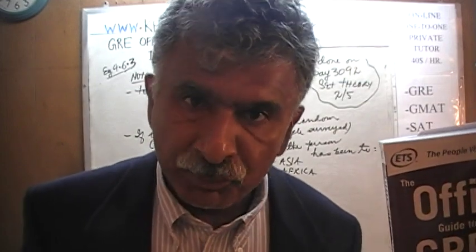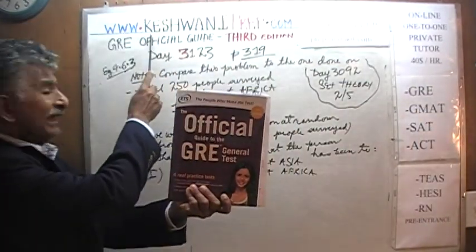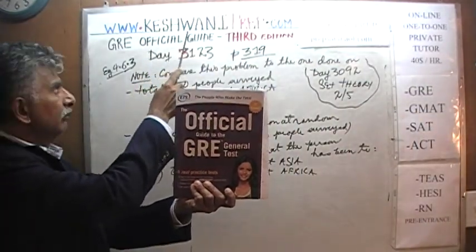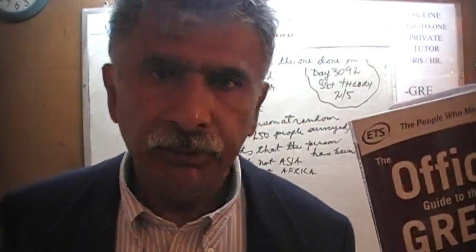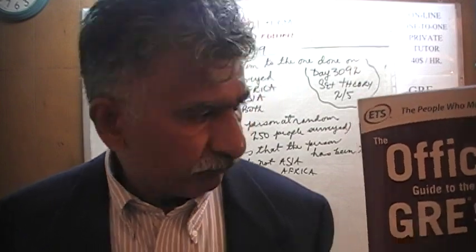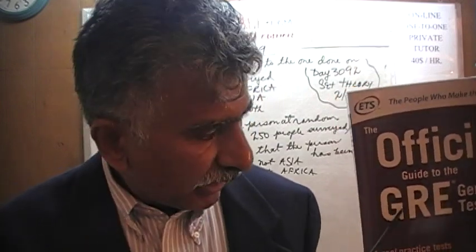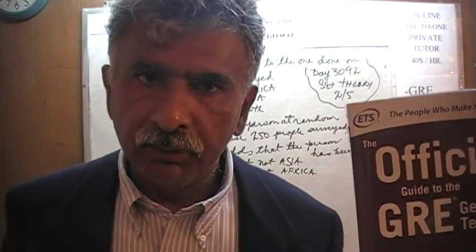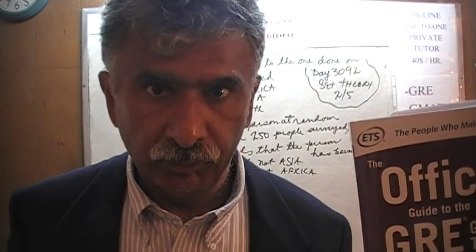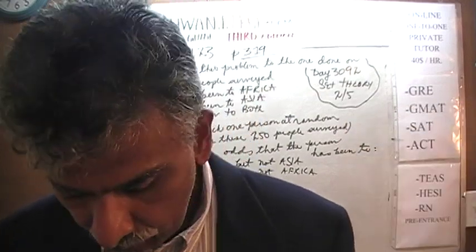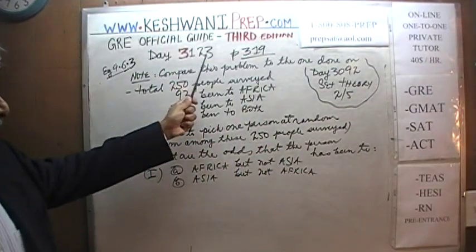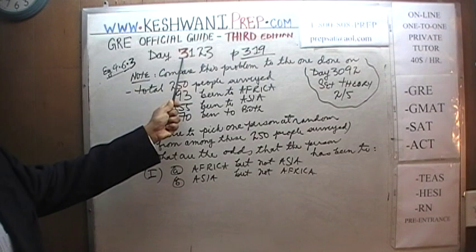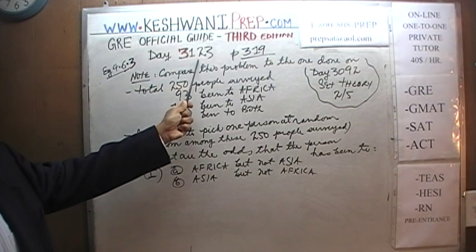Hello, my name is Keshwani, K-E-S-H-W-A-N-I. We are here because we want to prepare for the GRE. We have been solving math problems out of this book, the Official Guide to the GRE, the third edition. If you do not own this book already, purchase one immediately. You are going to need it. Today is our lesson number 123 — day 3123 — to signify the fact that we are in the third edition, day 123.